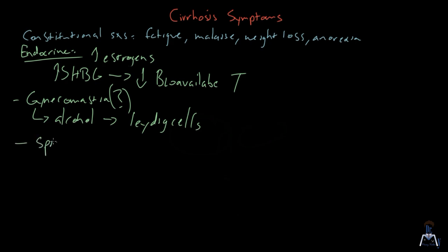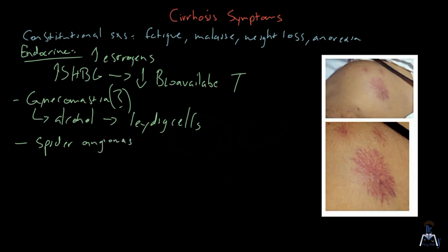It has a specific mechanism for an increase in gynecomastia risk. Another symptom directly due to the increase in estrogens are spider angiomas. This is what spider angiomas look like. They have a dilated central arteriole, which shows as a red spot surrounded by smaller vessels that look like spider legs. That's why they're called spider angiomas.